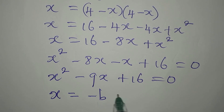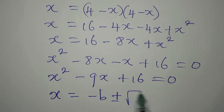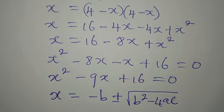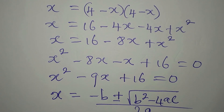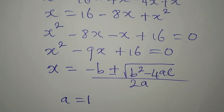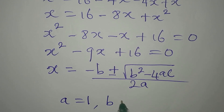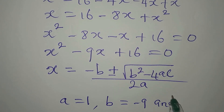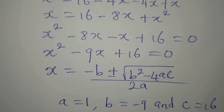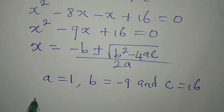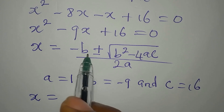We use the general quadratic formula: minus b plus or minus square root of (b squared minus 4ac), all over 2a. Now, our a is 1 (the coefficient of x squared), our b is minus 9, and c is 16.